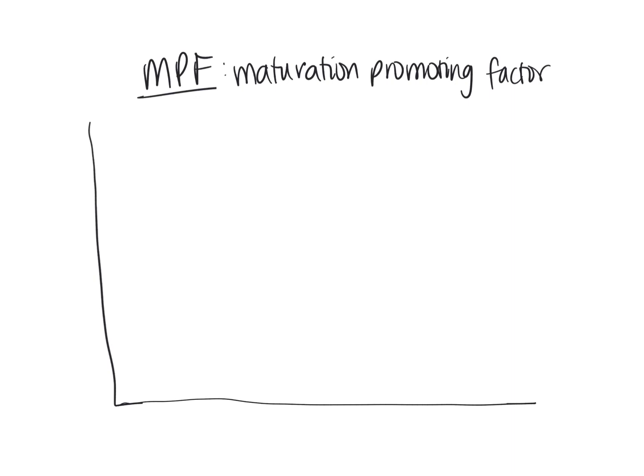MPF is made up of two parts. The first is a protein called cyclin. This protein was named cyclin because its levels fluctuate throughout the course of the cell cycle — they increase and then decrease, increase and decrease. The second part of MPF is an enzyme called cyclin-dependent kinase.